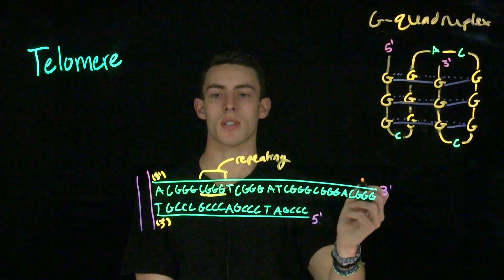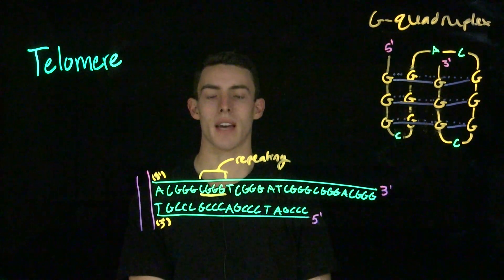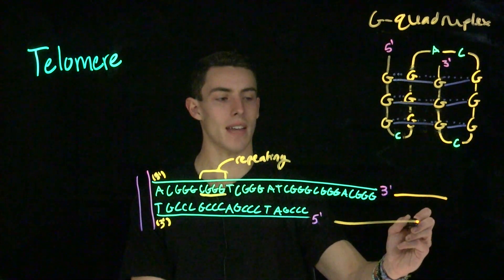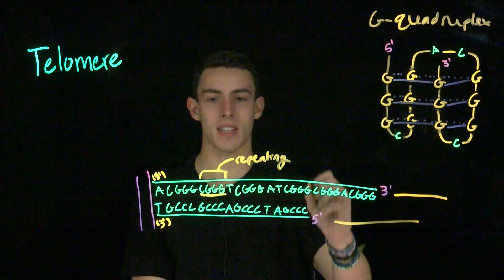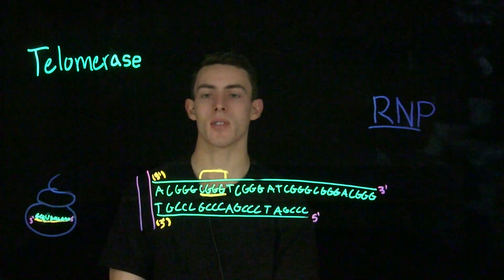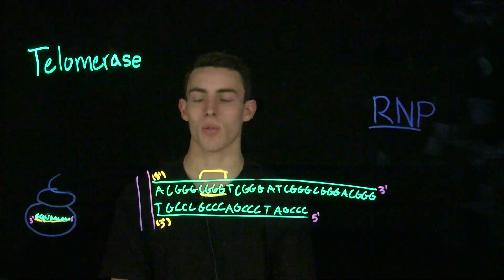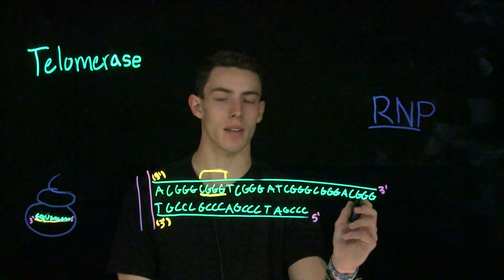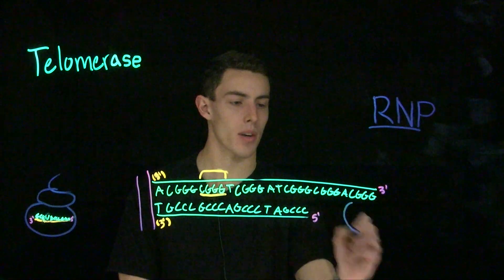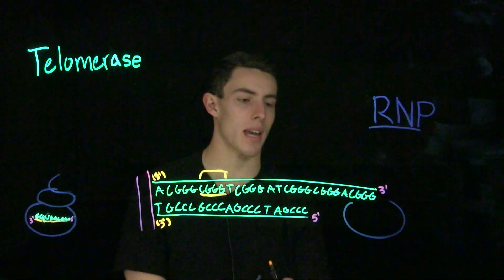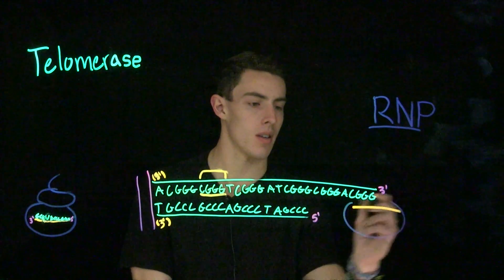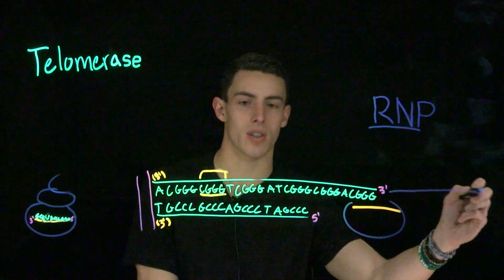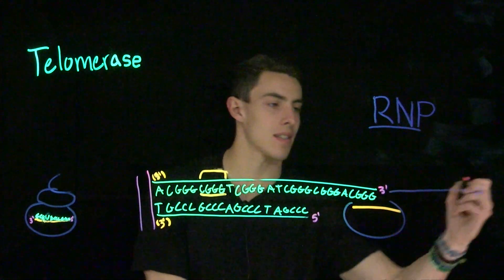Certain cells need something more important: an enzyme that helps replicate and extend the overhang and the underhang to reduce the amount of DNA lost. Within the protein subunits, telomerase contains a strand of RNA that is complementary and anti-parallel to the G-rich 3' overhang. Using this, telomerase is able to replicate this overhang and extend the DNA onward in the 3' direction. Thus, the 3' overhang extends.